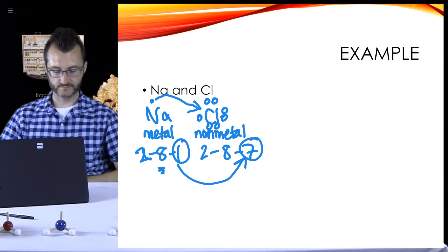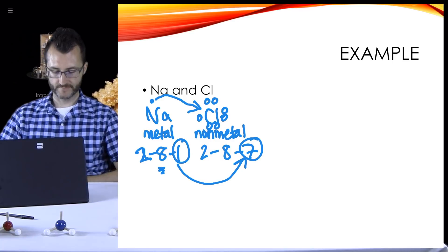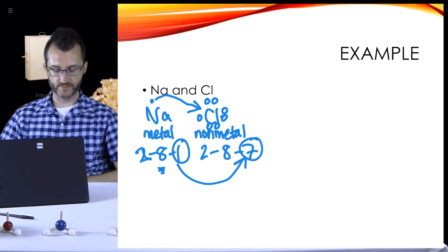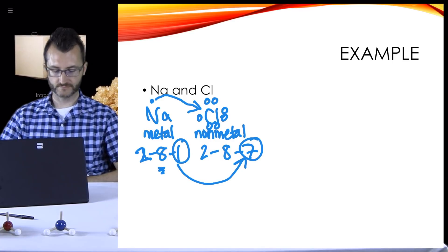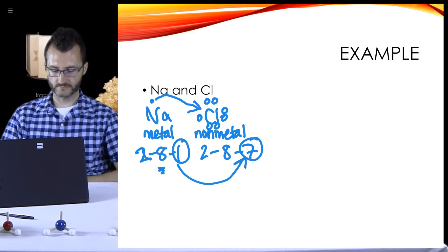Na is going to lose the one, and chlorine only needs one more, so it's going to gain it. If you look at those electron configurations for sodium of 2-8-1, when it loses that one, it's going to have 2-8, which is full. It's going to have eight electrons. And when chlorine gains that one, it'll have eight. So we're looking for that noble gas configuration here. They both have the eight.